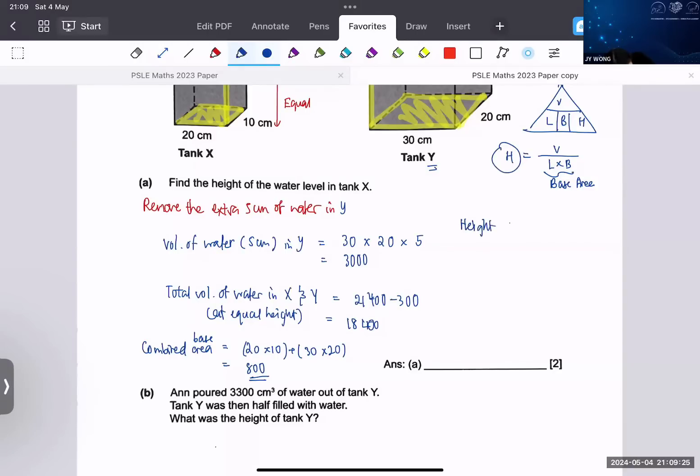Once I have this, I just need to use this formula to find height. I take the total volume 18,400 divided by the base area, 18,400 divided by the combined base area 800.